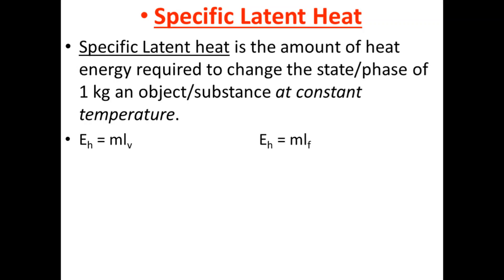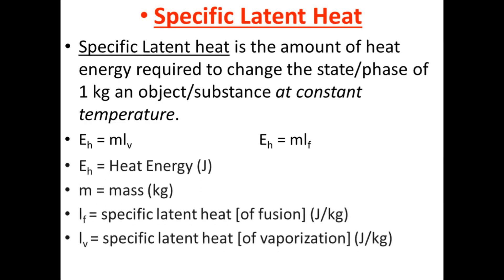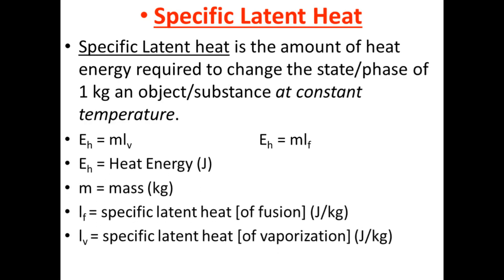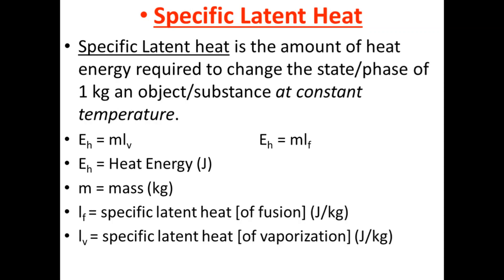Our formula for specific latent heat is E_H = ml_v or E_H = ml_f, where E_H is the heat energy measured in joules, m is the mass measured in kilograms, l_f is the specific latent heat of fusion measured in joules per kilogram, and l_v is the specific latent heat of vaporization, also measured in joules per kilogram.